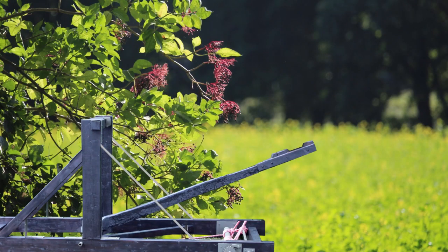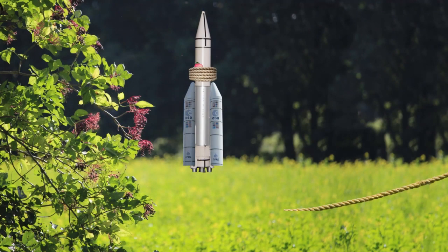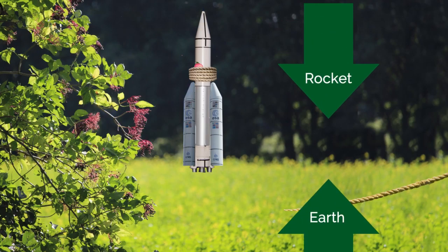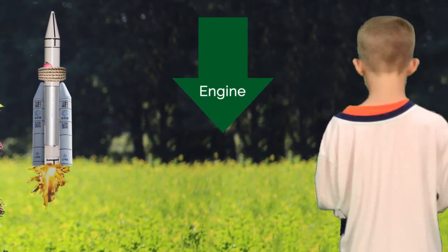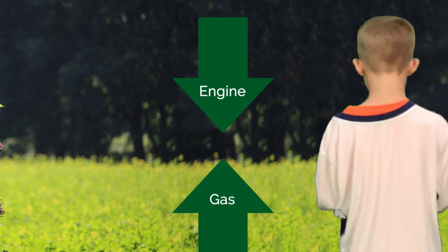Say your brother gets bored of simply throwing apples or launching them from a catapult. He decides to move on to the big stuff and decides to tie an apple to a rocket. As the rocket sits on the ground, the upward force of the earth balances the downward force of the rocket. But once your brother lights the engine, it pushes the gas down and out of the rocket, and the gas counters by pushing up and away from the rocket. This sends the rocket flying into outer space.